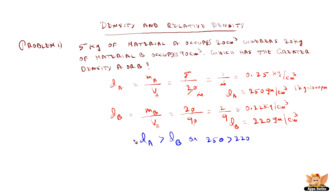So if the density of A is greater than B, then we know that the object made of A is heavier. That is the property: if the density of object A is greater than the density of object B, then A is heavier.